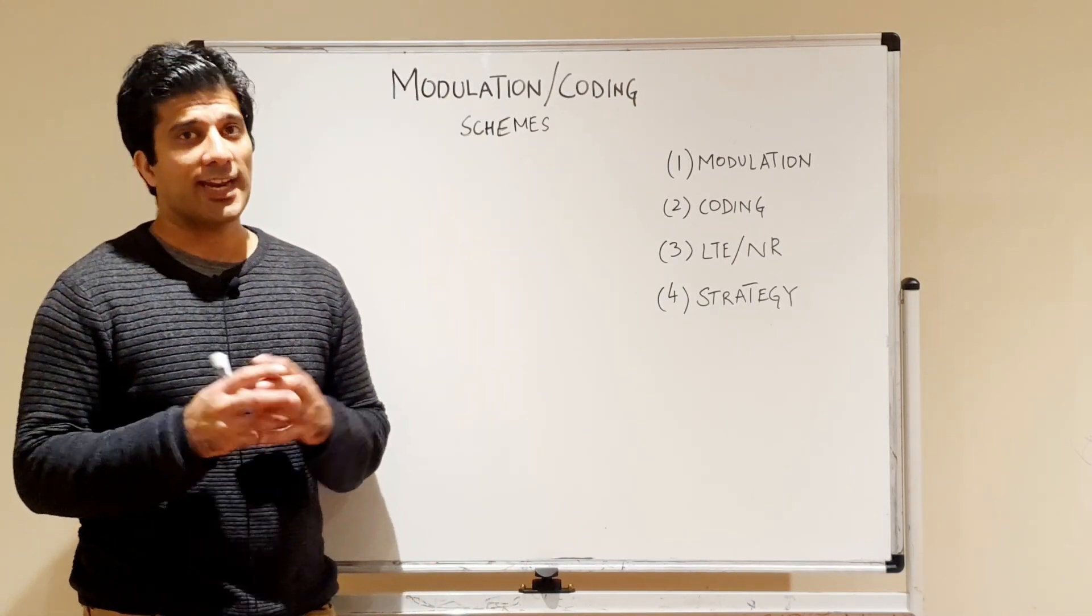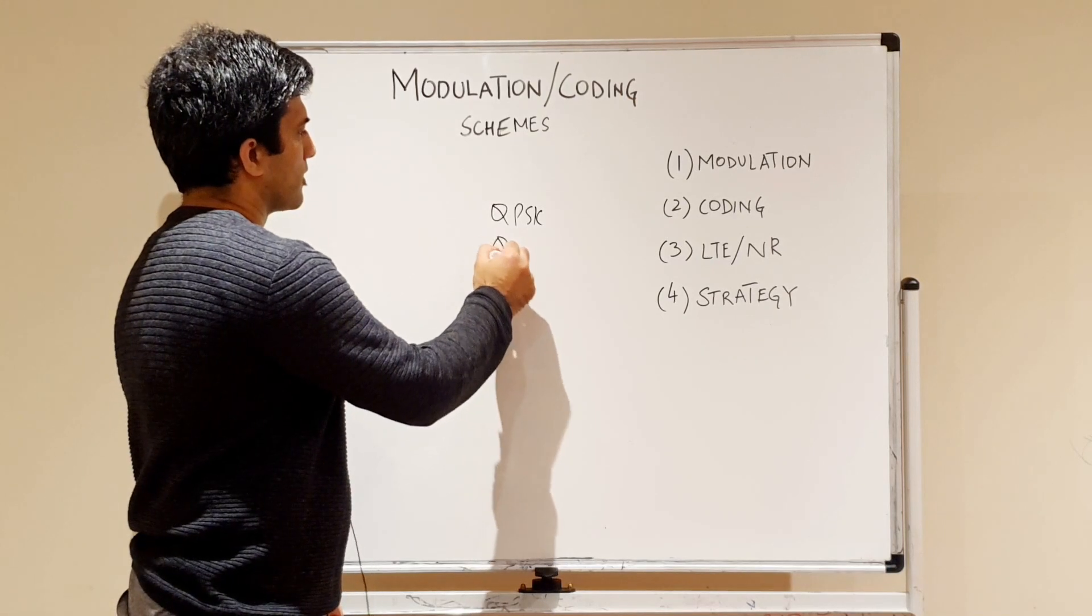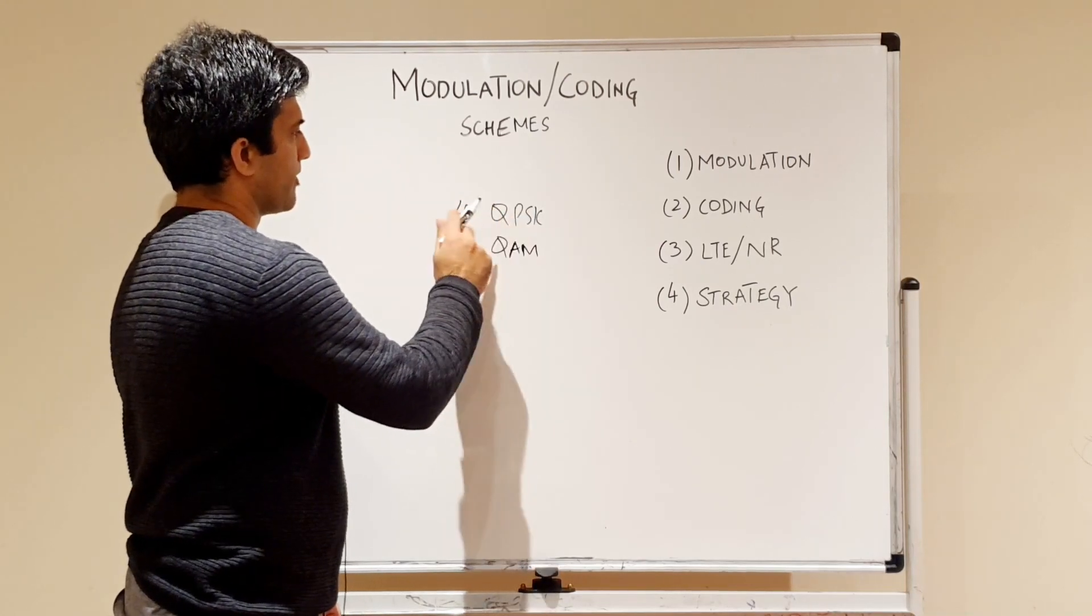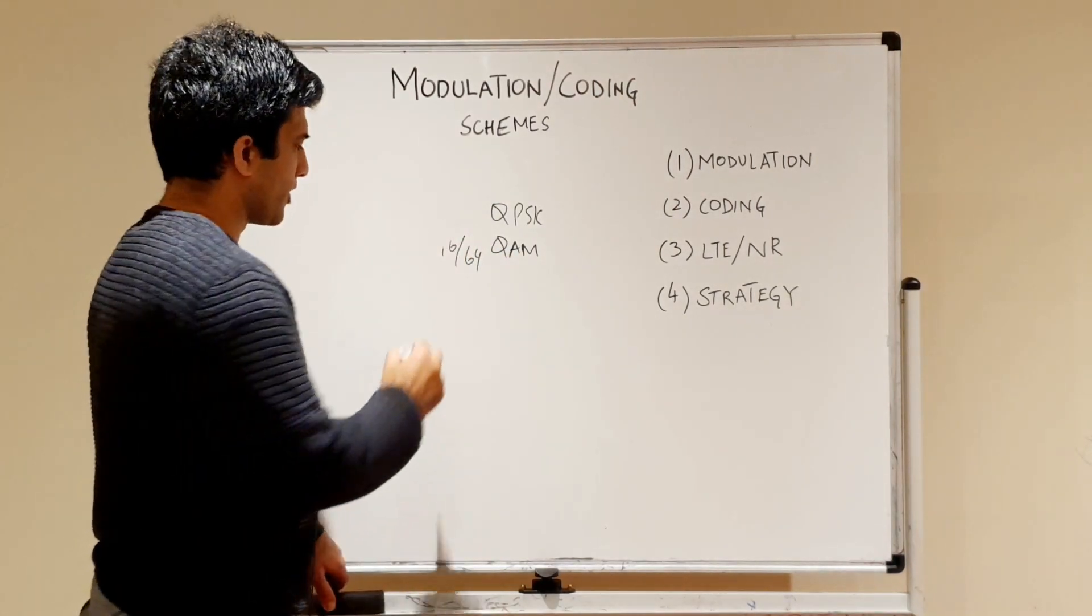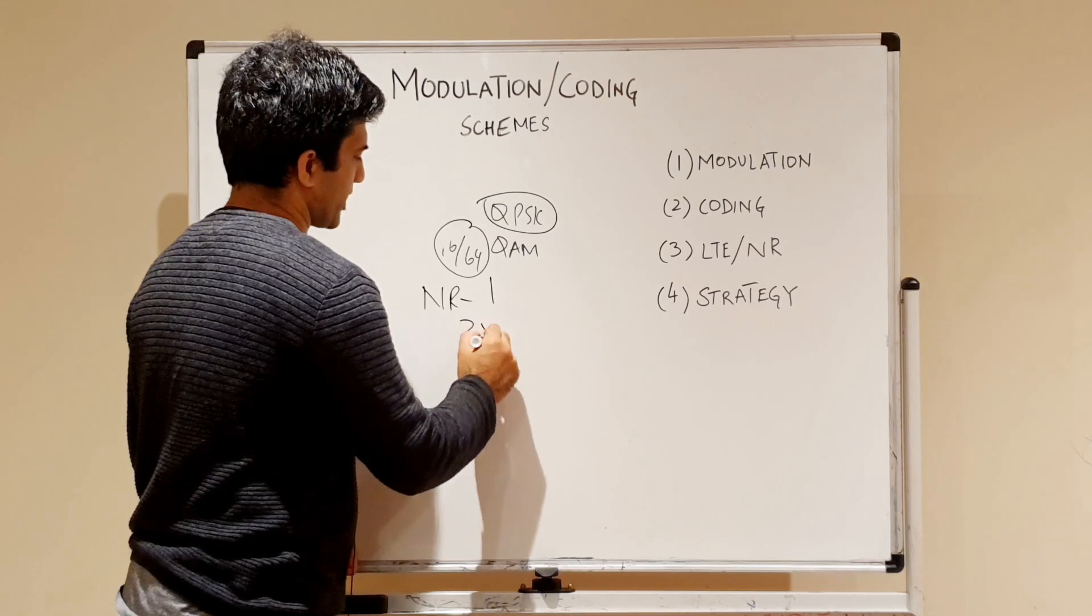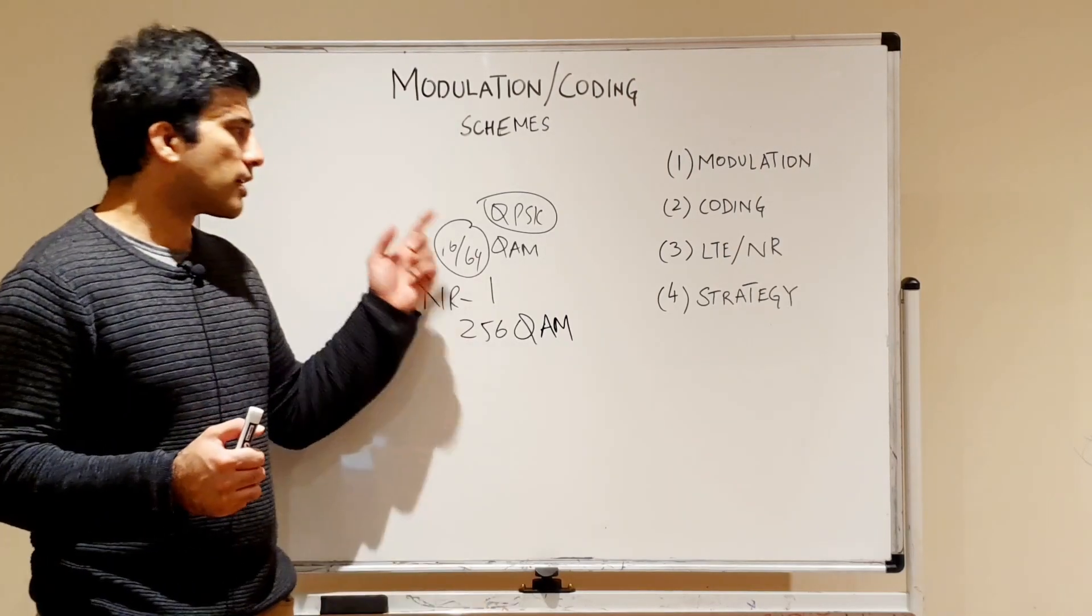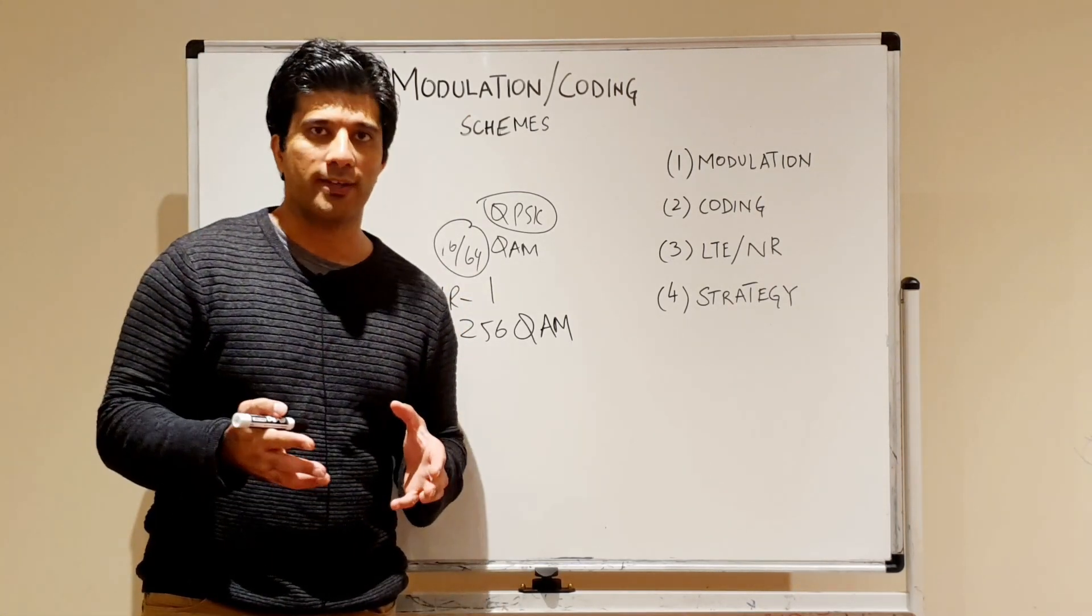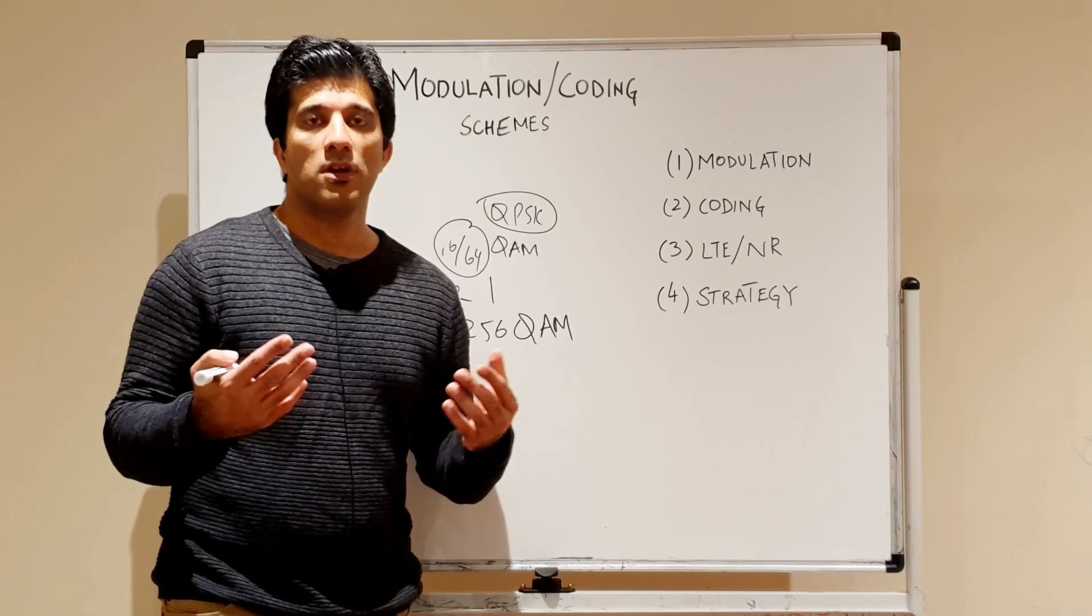So the first question is modulation. In LTE we had QPSK, and we had QAM - for QAM we have 16 and 64. The 4 in QPSK and the numbers are basically the number of symbols that you can actually transmit. Then in NR we have these two, and we also have 256 quadrature amplitude modulation. One thing I want to make clear is that I'm talking about downlink right now, so these modulation schemes for LTE and NR are in the downlink.